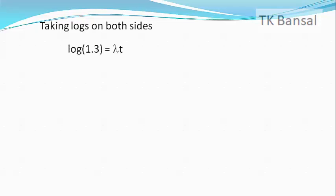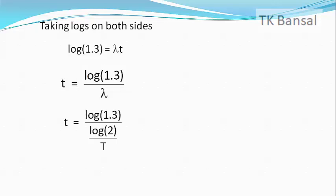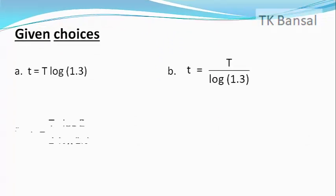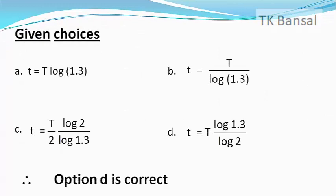Or t equals log of 1.3 divided by lambda. But we know lambda equals log of 2 divided by capital T. Substituting, we get small t equals log of 1.3 divided by log of 2 times capital T. Our answer matches with option D.